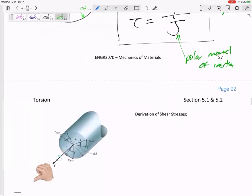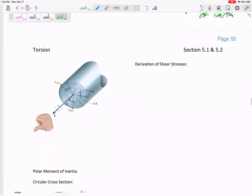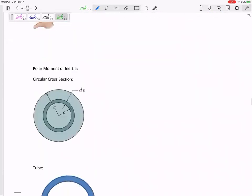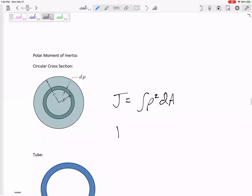We could also derive this. But next page, the polar moment of inertia, and this is on your formula sheet. Technically, it's the integral of rho squared dA, but for a solid circular cross section, one half pi. The book might say C to the fourth. It's just the outer radius to the fourth.